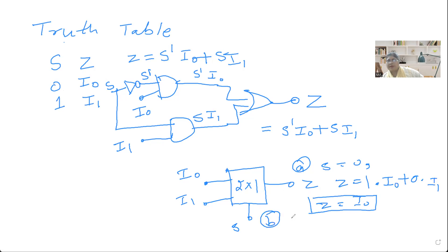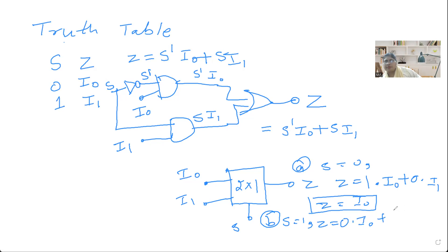Now for the next condition: if S is equal to 1, then S-dash equals 0, so Z equals 0·I0 plus 1·I1, which gives Z equal to I1. That is, by giving select line S equal to 1, I1 will be connected to the output. This matches what we already saw in the truth table.